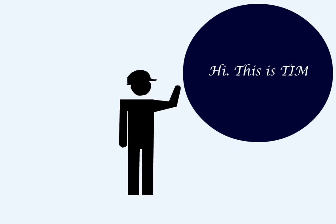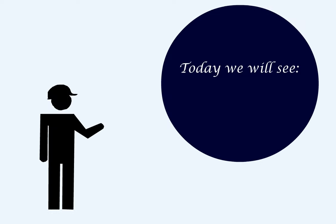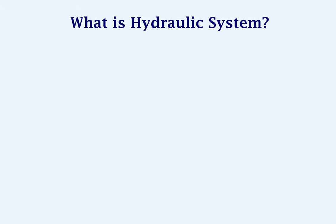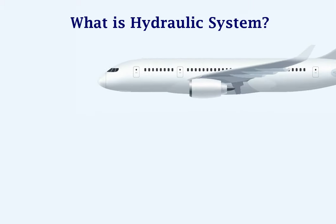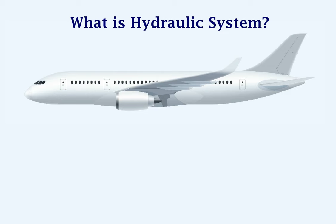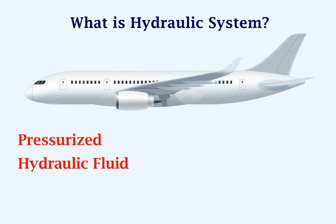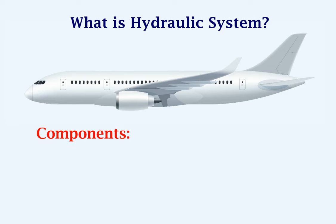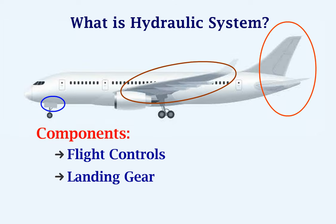Hello, this is Tim. Today we will talk about the hydraulic system on an aircraft. First, let's see what is a hydraulic system. This is a system which uses pressurized hydraulic fluid for the movement of different components of an aircraft. These components could include flight controls, landing gear extension and retraction, and the brakes.